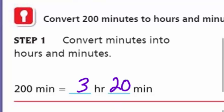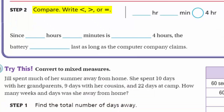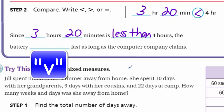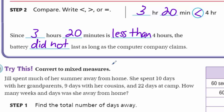Step two: we need to compare - less than, greater than, or equal to. We have 3 hours and 20 minutes. How does that compare to 4 hours? You should be able to tell right away - that's less than! And since 3 hours and 20 minutes is less than 4 hours, we write: the battery did not last as long as the computer company claims.